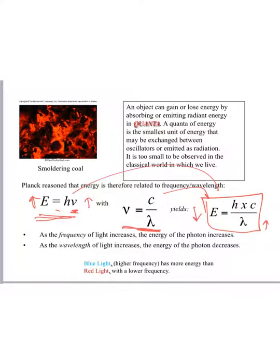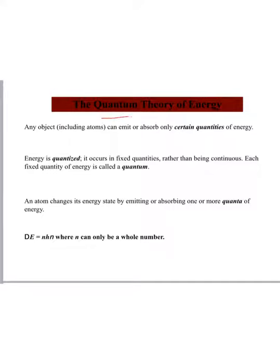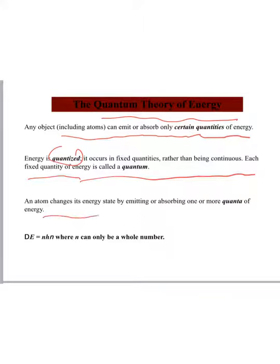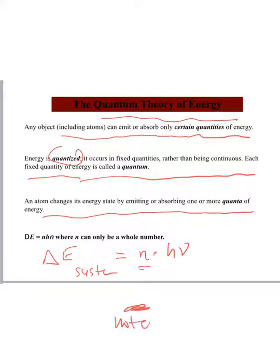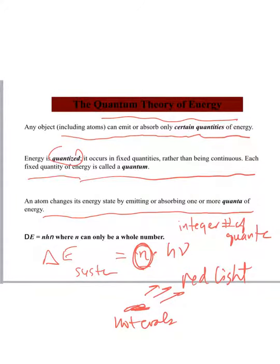I had mentioned earlier with the rainbow that red light has less energy than blue light. So this is the quantum theory of energy that Max Planck was very responsible for. Any object can emit or absorb only certain quantities of energy. Energy is quantized. It occurs in fixed quantities rather than being continuous. Each quantity of energy is called a quantum. An atom changes its energy state by emitting or absorbing one or more quanta of energy. Now this is really here. The change in the energy of some system is going to be some integer times h nu, where n can only be a whole number. So this is basically saying if you have some hot coals here and they're emitting red light, there are an integer number of quanta that are being emitted from the hot coals.